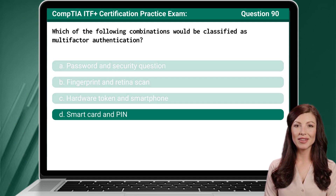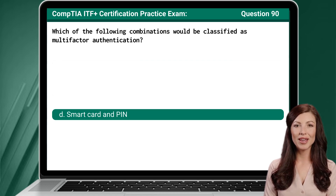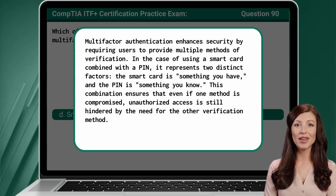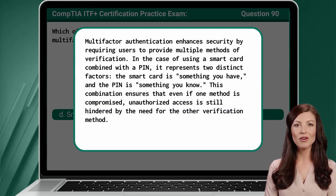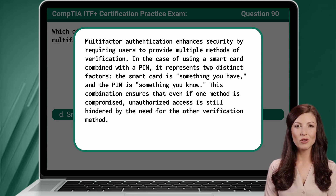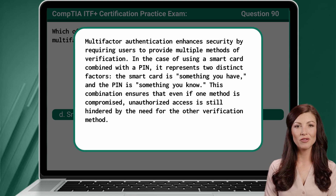The answer is D. Smart card and a PIN. Multi-factor authentication enhances security by requiring users to provide multiple methods of verification. In the case of using a smart card combined with a PIN, it represents two distinct factors: the smart card is something you have, and the PIN is something you know. This combination ensures that even if one method is compromised, unauthorized access is still hindered by the need for the other verification method.